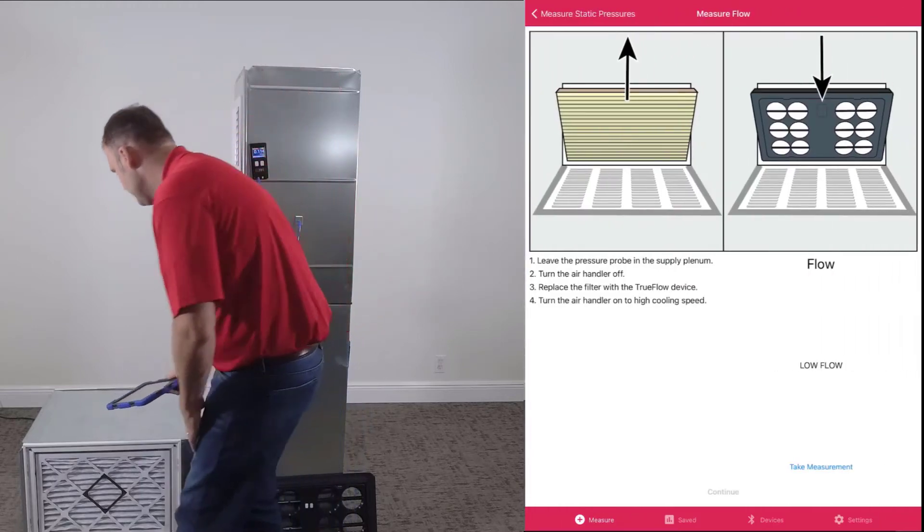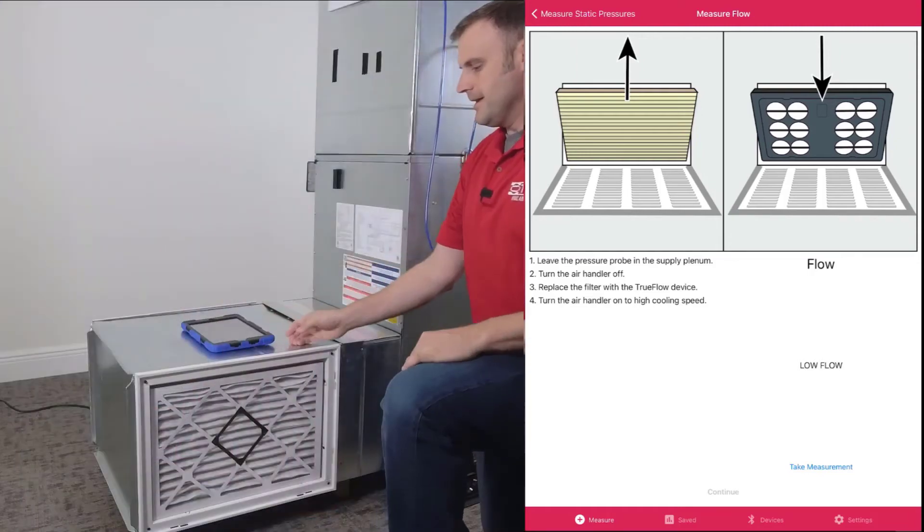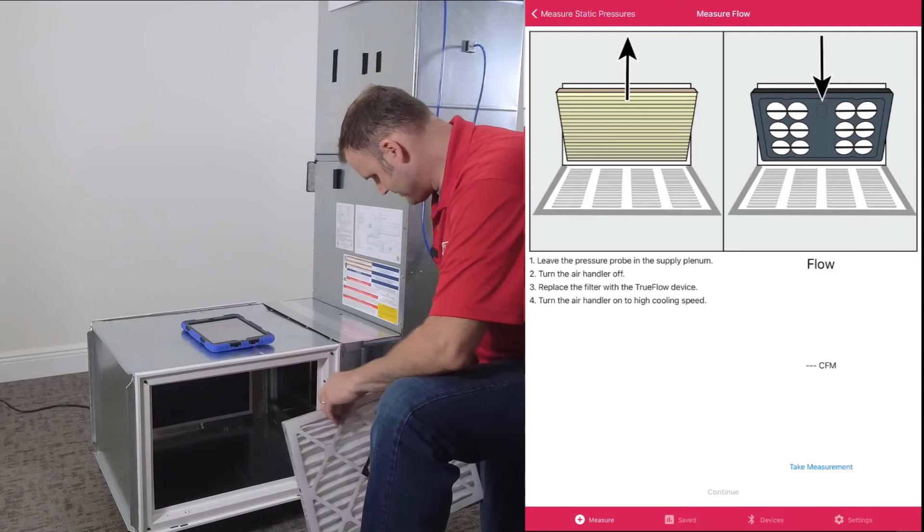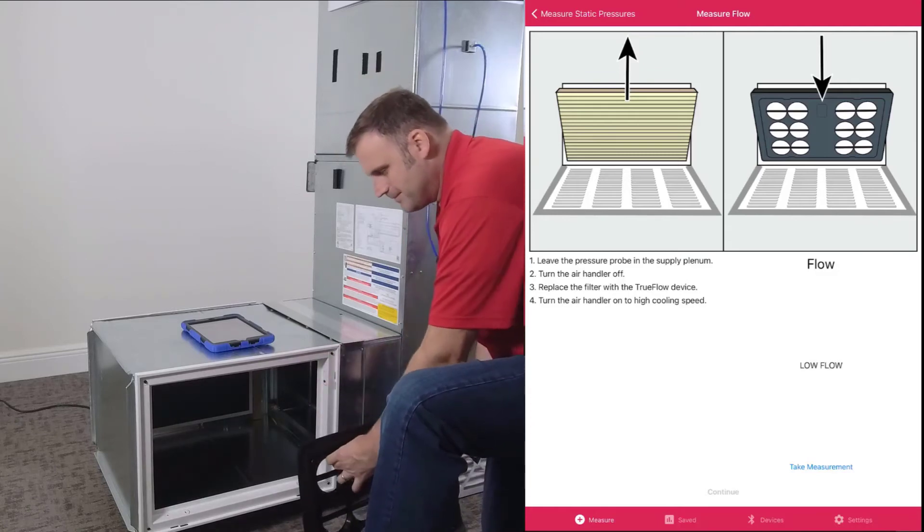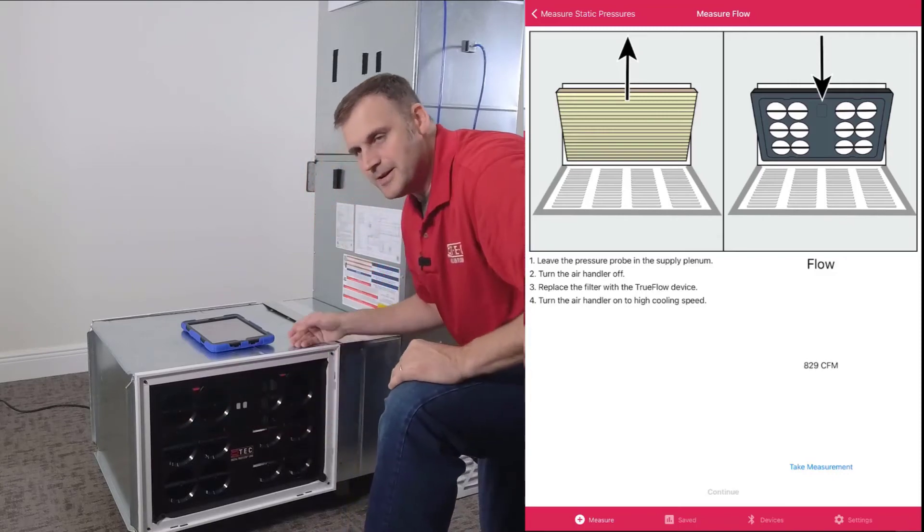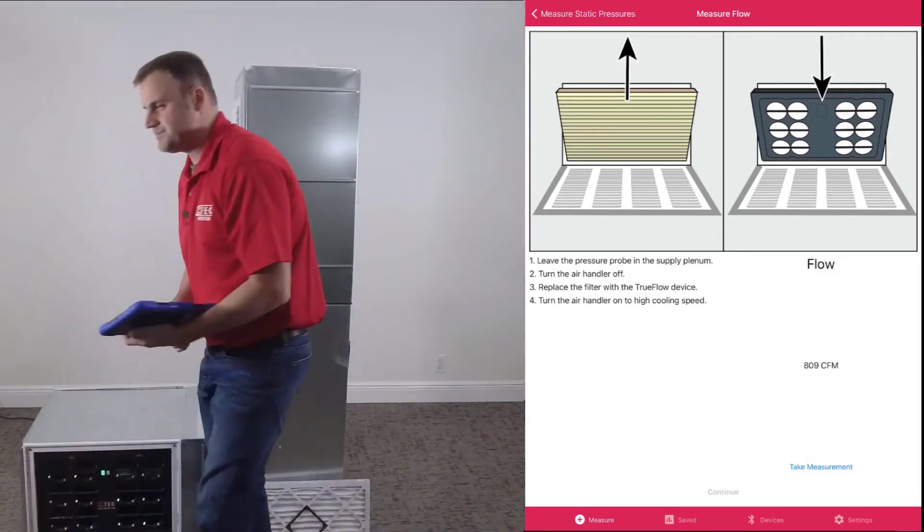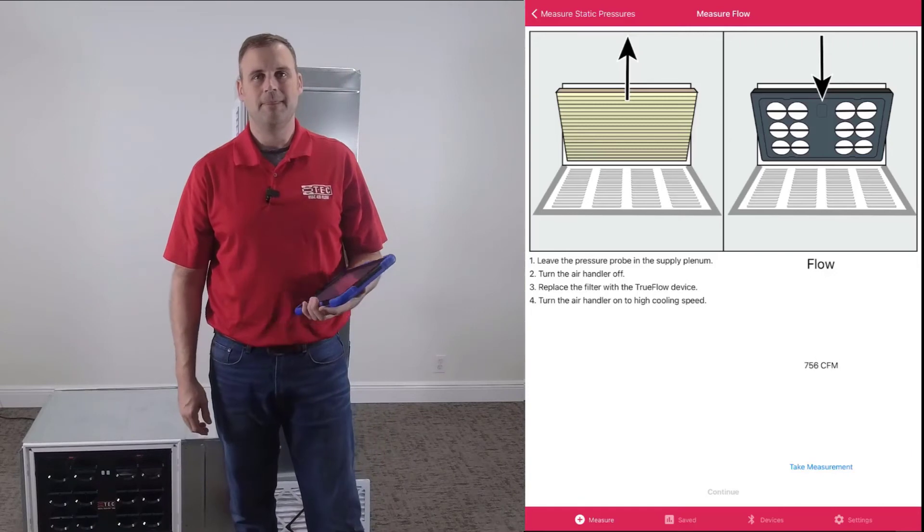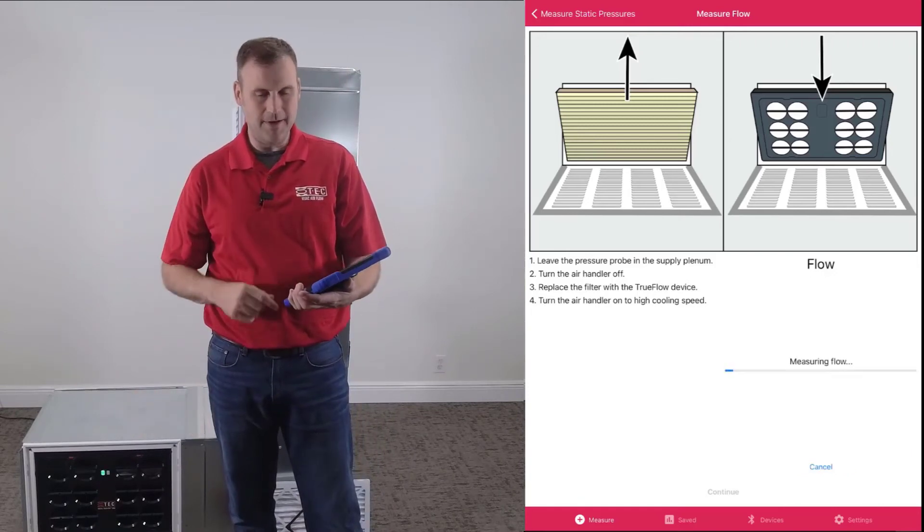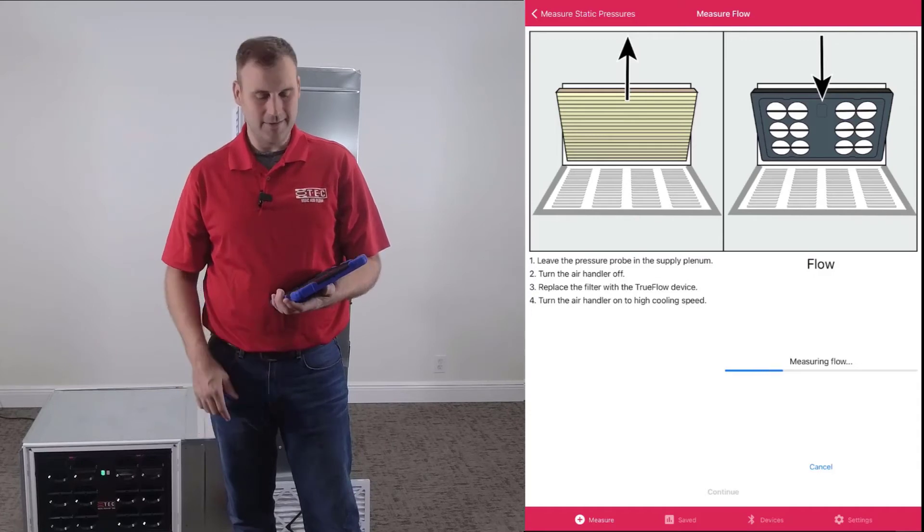This is when the app is telling us to take the filter, remove it from the system, and install the Digital TrueFlow Grid. With the grid installed, we can now click take measurement. Give it a few seconds.